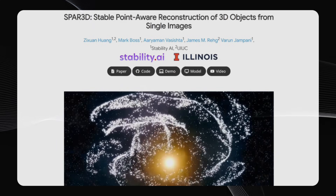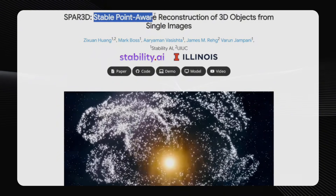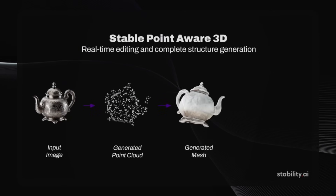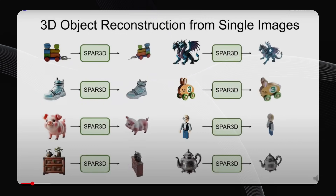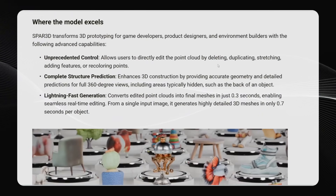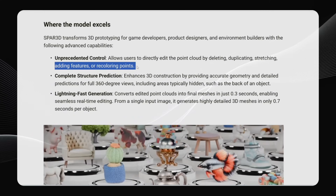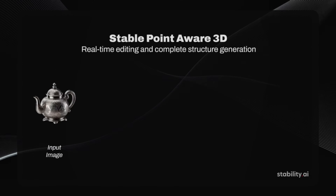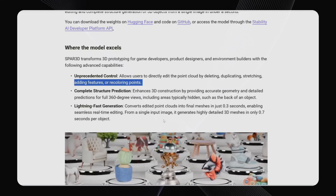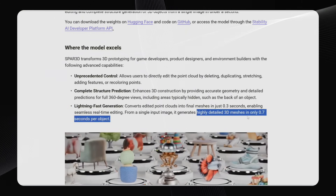Now let's shift gears and talk about something truly mind-blowing: SPAR 3D, or Stable Point Aware Reconstruction of 3D Objects. This is the brainchild of Stability AI, the same team that brought us Stable Diffusion. SPAR 3D takes a single image and, in real time, generates a 3D object from it. You can also instantly edit and manipulate this 3D object — duplicating it, stretching it, adding new features, or recoloring specific parts, all in the blink of an eye. It converts edited point clouds into final meshes in a mere 0.3 seconds, and generates highly detailed 3D meshes in only 0.7 seconds per object.